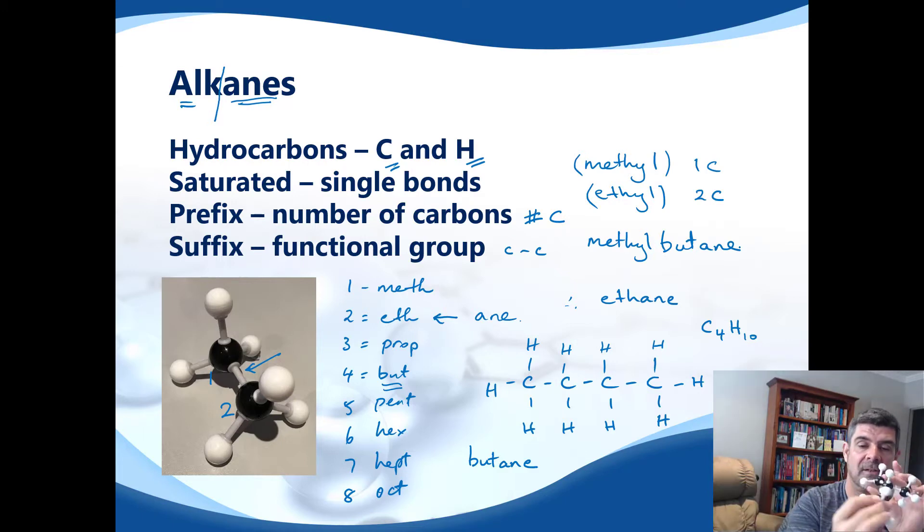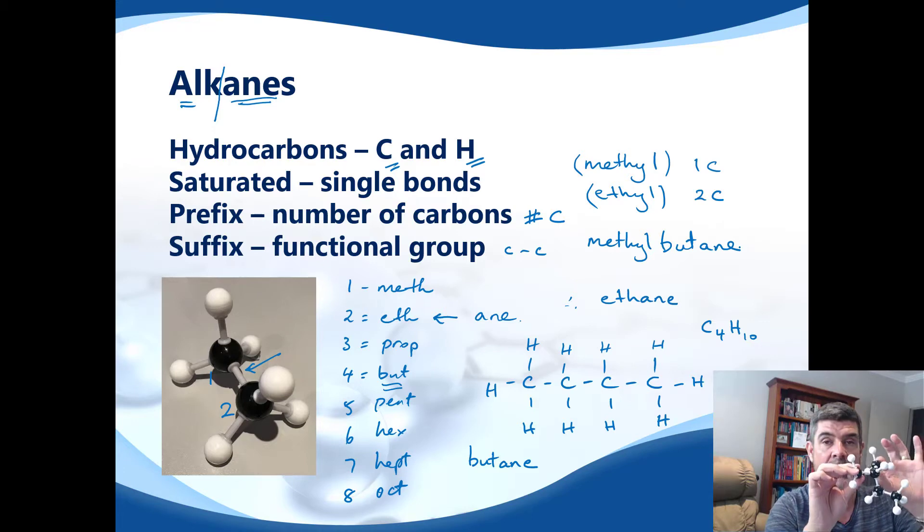But where it is currently, it's sitting on one of the two middle carbons. So if we were to count the longest chain, which is one, two, three, four, you can see that our methyl group comes off the second carbon. Of course, if I count from the other end, one, two, three, four, then it would be coming off the third carbon.